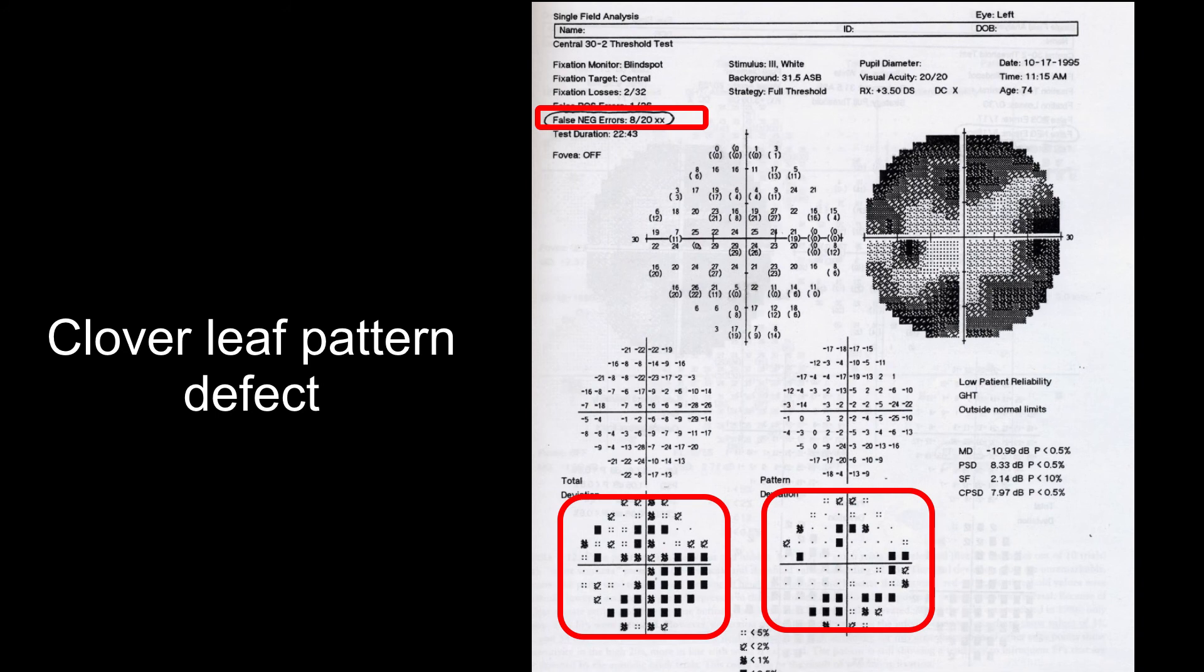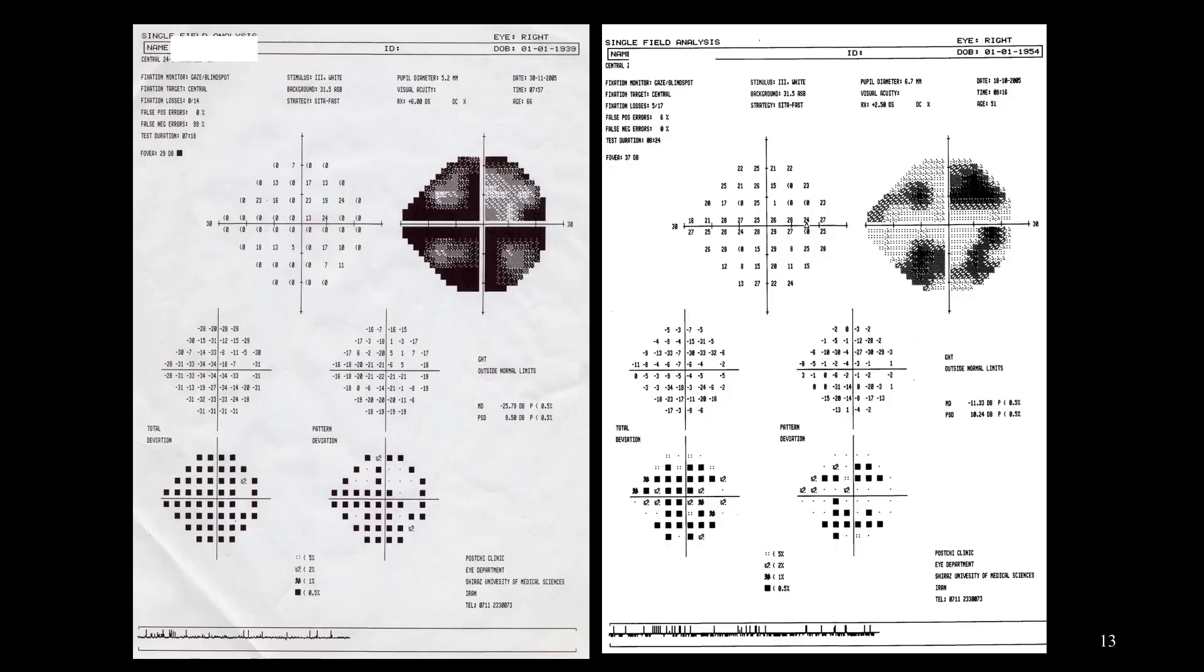We have a darker total deviation compared to the pattern deviation. We get low reliability message, the GHT is outside normal limits, the mean deviation has negative value and abnormal PSD.